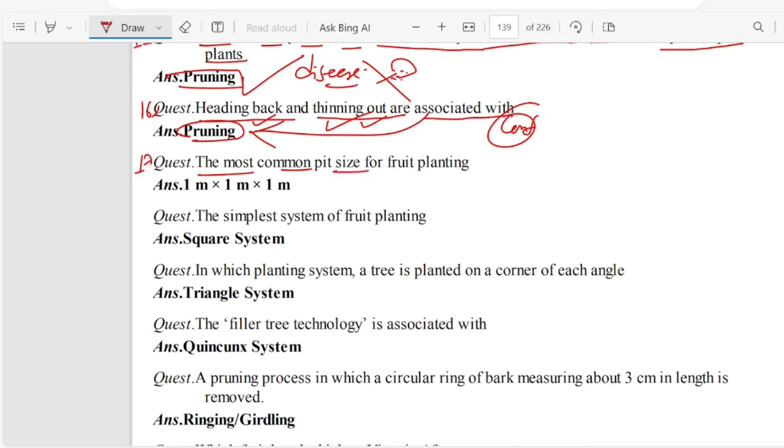Question 17. The most common pit size for fruit planting is 1 meter by 1 meter by 1 meter. Question 18. The simplest system of fruit planting is square system.